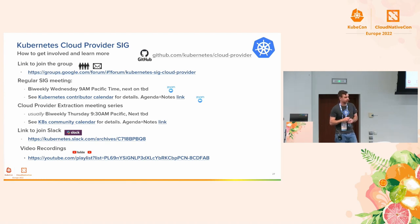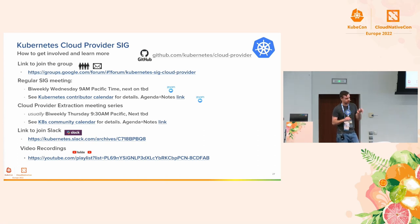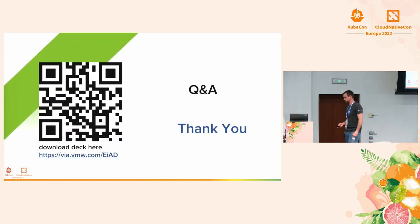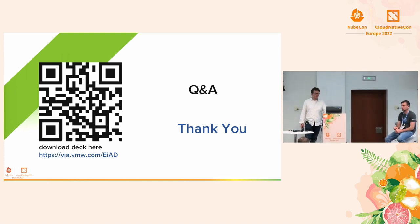Just some information about our SIG: when we meet, we have a couple of bi-weekly meetings. There's the regular SIG meeting, which is Wednesdays at 9 a.m. Pacific time. We also have an extraction-focused meeting which is bi-weekly at 9:30 on Thursdays, and they alternate — every other week you have extraction, then regular SIG meeting. There's a Slack channel and video recordings. We've got some time for Q&A — please raise your hand so we can get it on the audio for the remote audience. You can download this deck using the QR code or the URL.